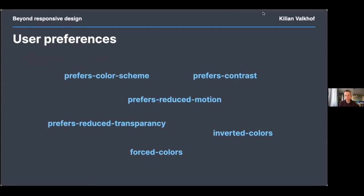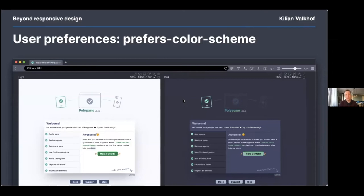We'll start with prefers-color-scheme — or as most people know it, dark mode. Nobody really cared about dark modes until Apple came out with dark mode, and it turns out we already had a media query for that. Prefers-color-scheme indicates whether your user prefers to see a light or dark version of your site — dark for easier eyes and less contrast, or light for increased contrast and readability. Neither is better; both are beneficial to different visitors.